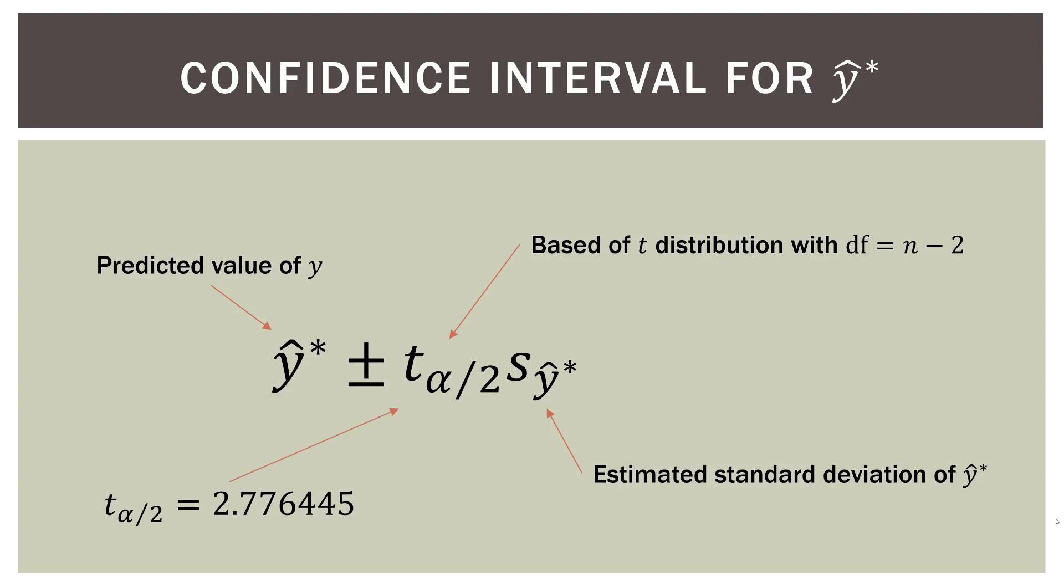Now we already know this t alpha over two because we've been using it in the past like three or four videos. Because we're using the same data set that has six observations, we can find this t value n minus two, which is six minus two, degrees of freedom is four. Go to the back of the textbook and we find what that is for a 95% in the t distribution. 0.025 on each end. Then that is 2.7764. We've been doing that in the previous videos. So we already have that.